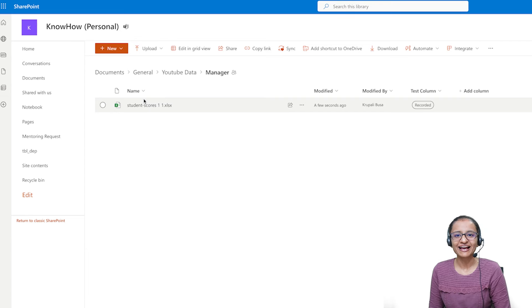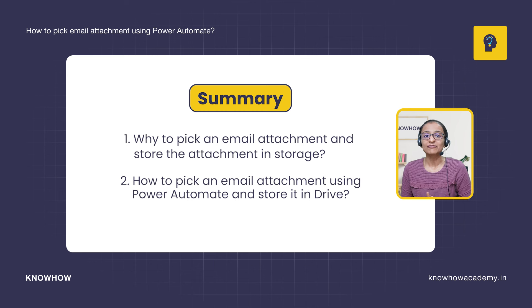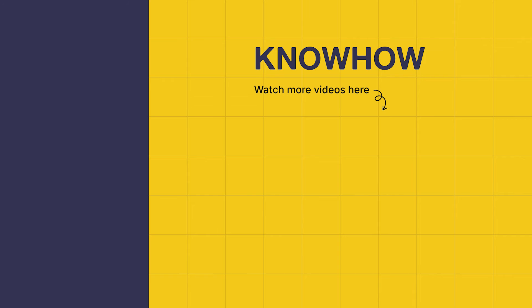This is how you can pick an email attachment and save it in your OneDrive or SharePoint site using Power Automate. In this video you learned: first, why you should save email attachments to storage automatically when they arrive; and second, how to save email attachments in SharePoint or OneDrive using Power Automate. Thank you for choosing KnowHow Academy — if you have any questions, please ask in the comment section.